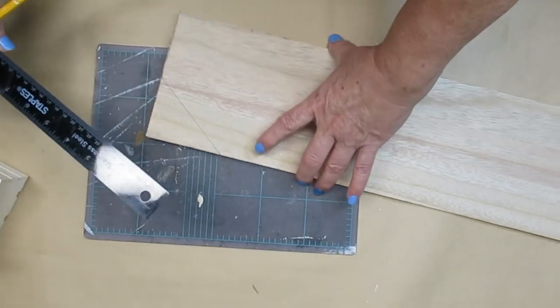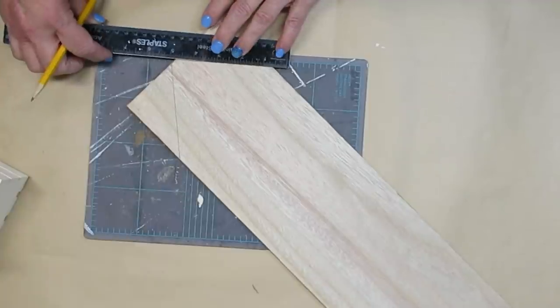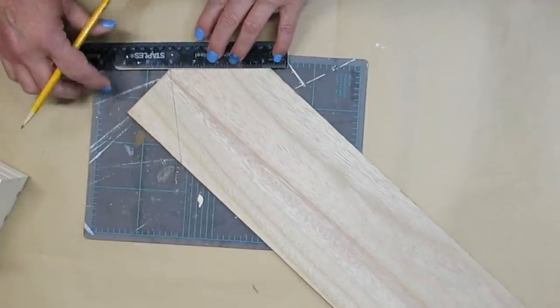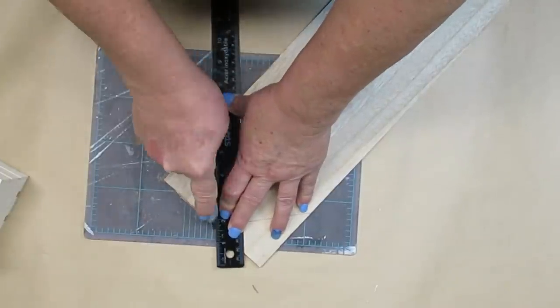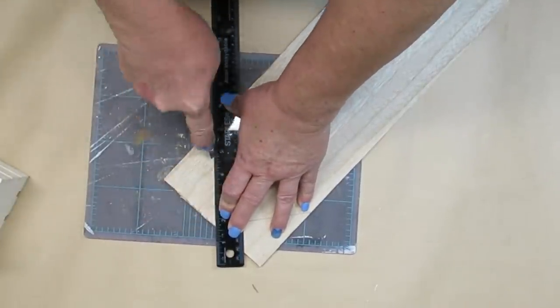Next I'm going to measure how far down I want my angles to be. I'm going to create a picket fence stake out of this. Once I have the angle where I want it to be, again I'll just use my utility knife and cut it down.